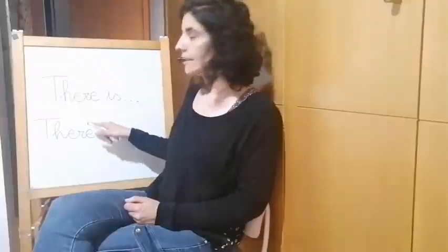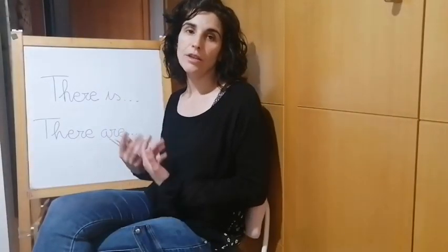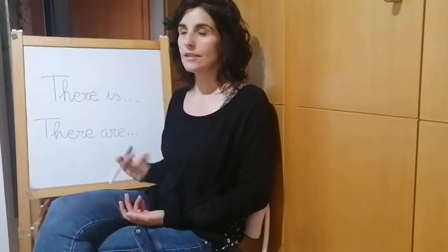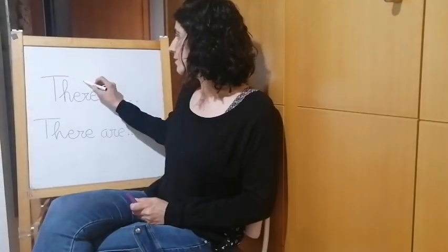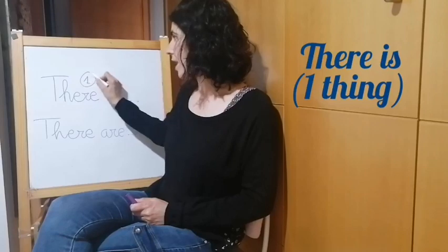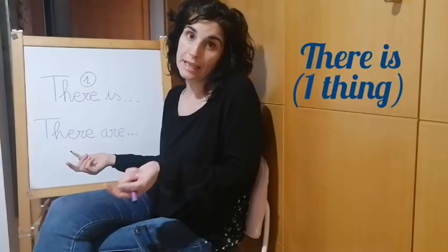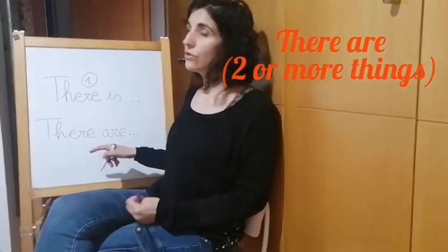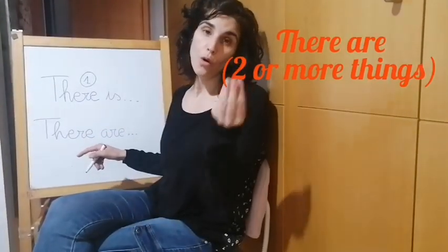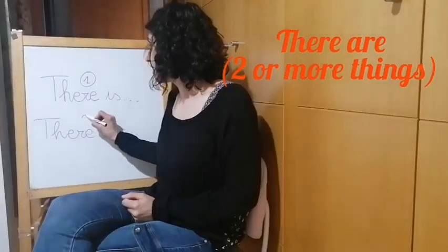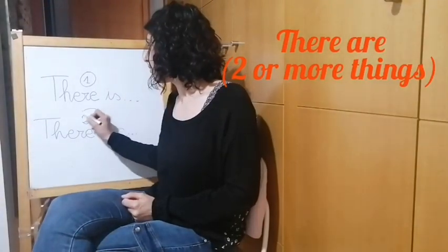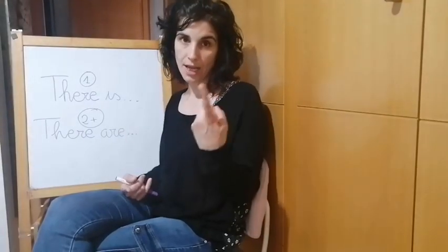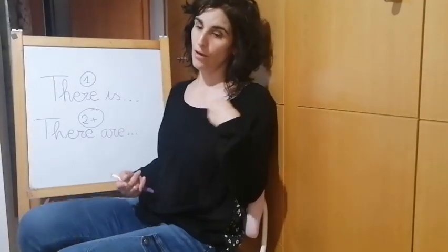We use there is and there are to talk about things, to say that one thing exists or that we can see things. We use there is to talk about one thing, and we use there are to talk about two or more things. There is for one thing and there are for more than one.